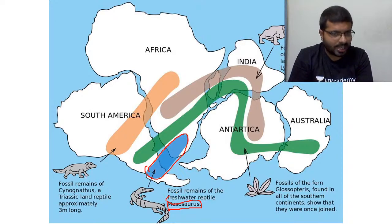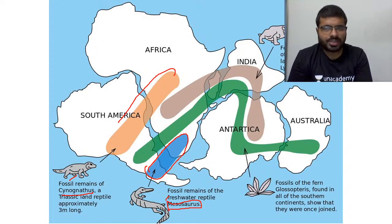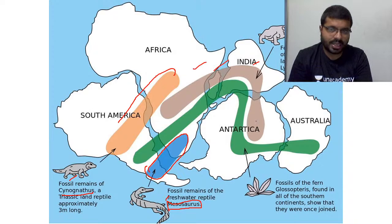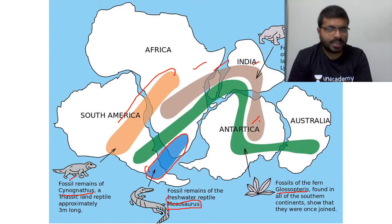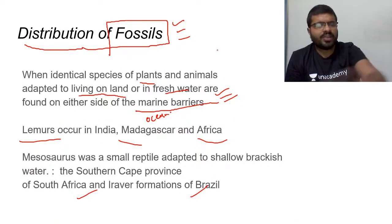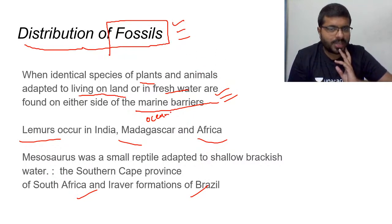Similarly, fossil evidence of another land reptile called Cynognathus is found across South America and Africa. Lystrosaurus fossils are found across Africa, Madagascar, India, and Antarctica. The plant fossil Glossopteris — shown in green on the distribution map — is found across almost all the continents, further confirming they were once united.